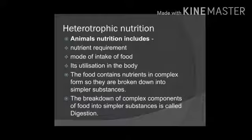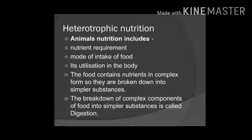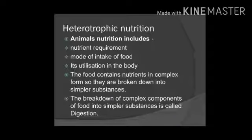First is heterotrophic nutrition. In the first chapter we have studied about autotrophs and autotrophic nutrition. In this chapter we will study heterotrophic nutrition — it is the nutrition which is seen in animals.